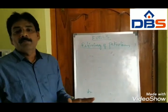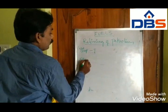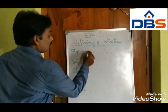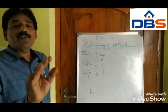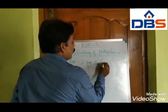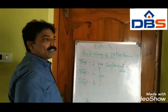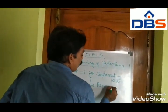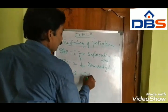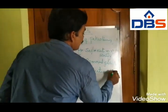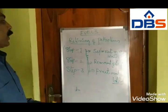The refining of petroleum involves three steps. Step one, step two, and step three. Step one is the separation of water. Step two is the removal of sulfur. Step three is fractional distillation.